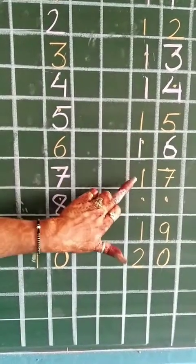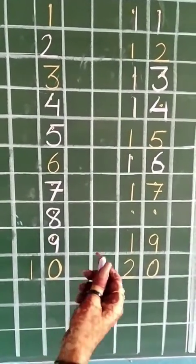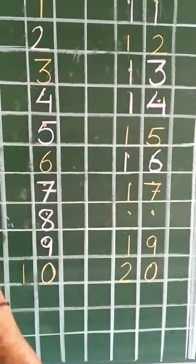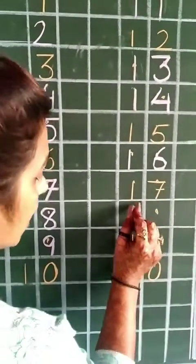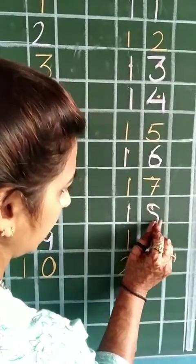What comes after fifteen? Sixteen, one six, sixteen. Again the next box is empty, so we have to fill this box. What comes after seventeen? Eighteen, one eight, eighteen.